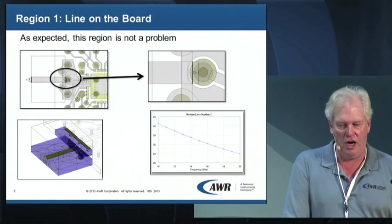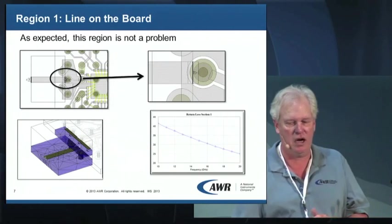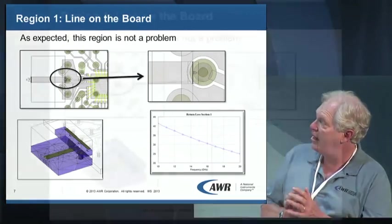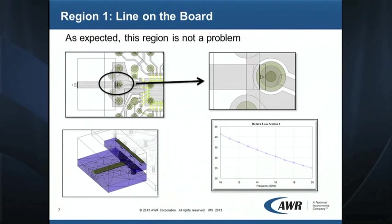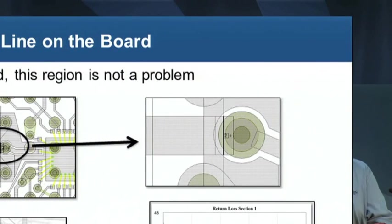Region one: the line on the board. You can see the simulation box has been made smaller on the left — they're just interested in that region. Zooming in on the right, they actually added a port at the end of the line, which is an internal port because it does not go to the edge of the box.